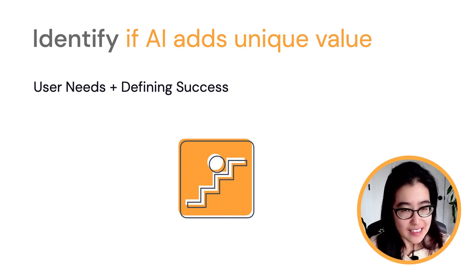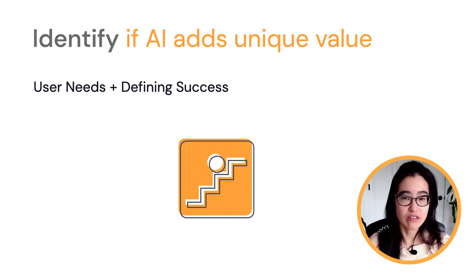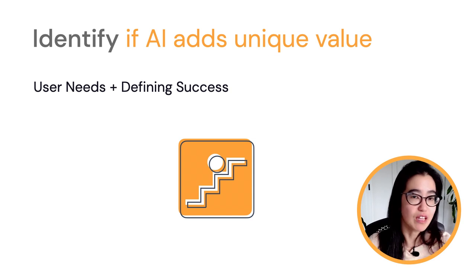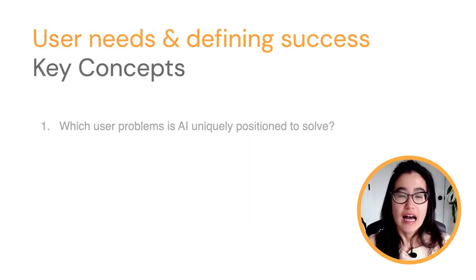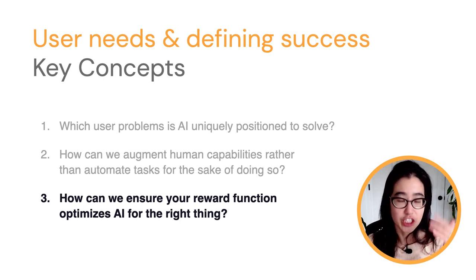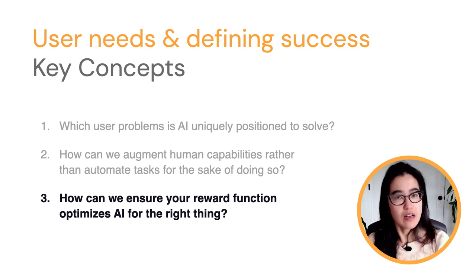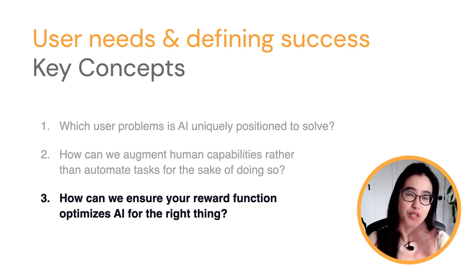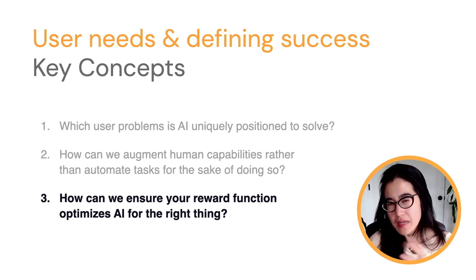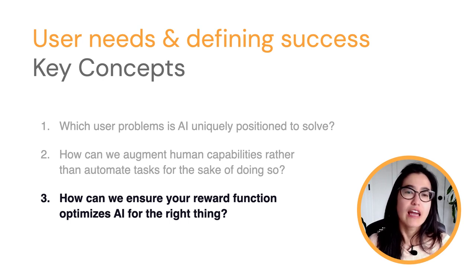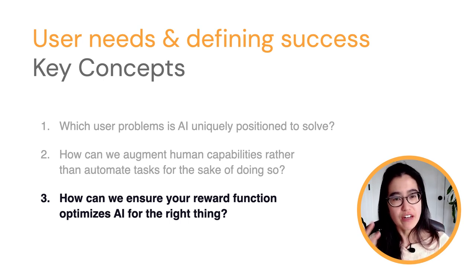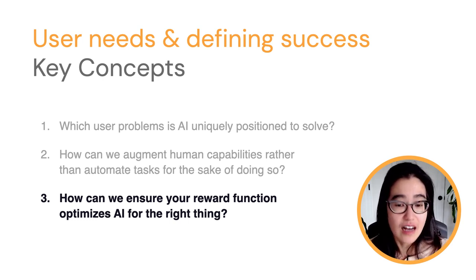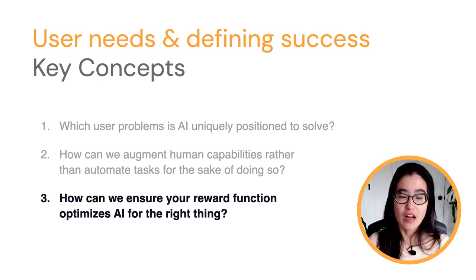User needs and defining success is one of the most important chapters because it covers many of the considerations integral to the problem framing phase of the product development life cycle, which is the bedrock for everything that follows. There also needs to be a metric that AI could optimize for in meeting the user's need, and we need to ensure we're defining that metric in a people-centered way that's mindful of secondary effects or unintended consequences. For our talk today, we're going to be focused on this last key concept: how can we ensure that your reward function optimizes AI for the right thing?